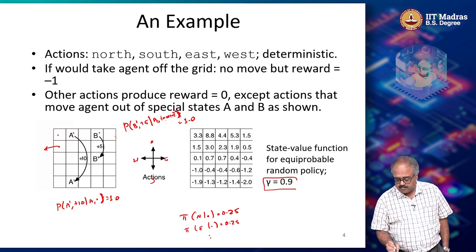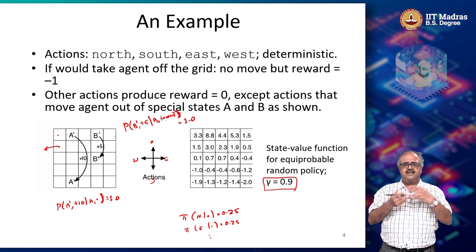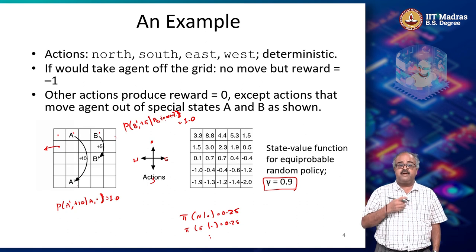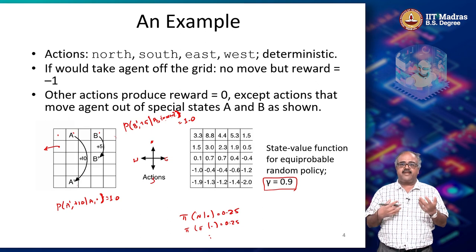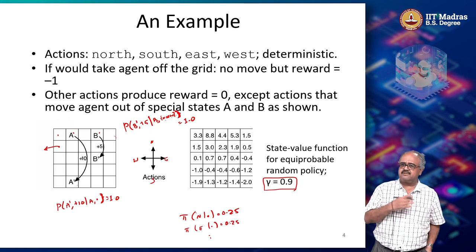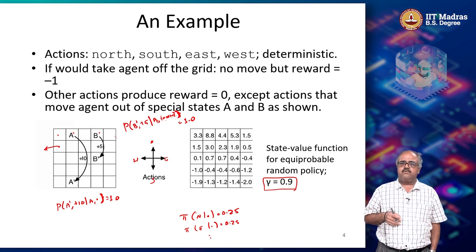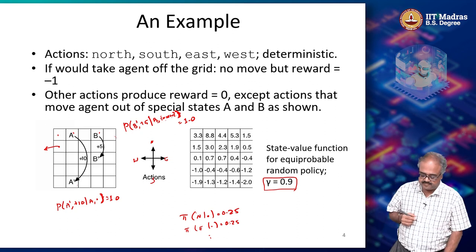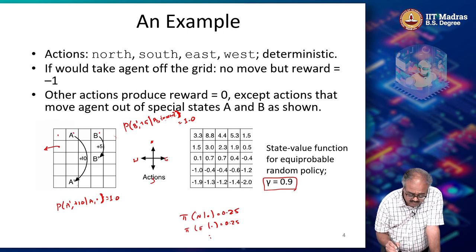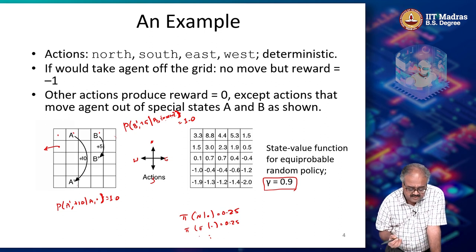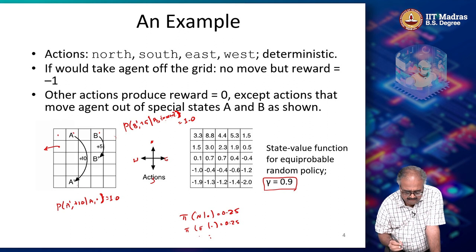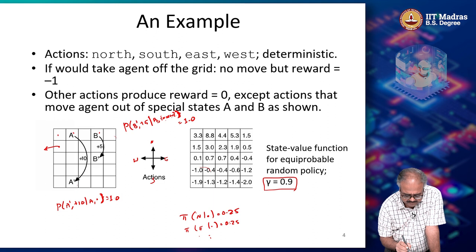We set gamma = 0.9 because without a minus 1 for every step, the agent could potentially just wander around for a long time as long as it gets some positive reward occasionally. We want it to do something meaningful. With this equiprobable random policy and gamma = 0.9, I can compute the value function for all the states. Let us pick one state and see how we do that, assuming I already know the values of the neighboring states.